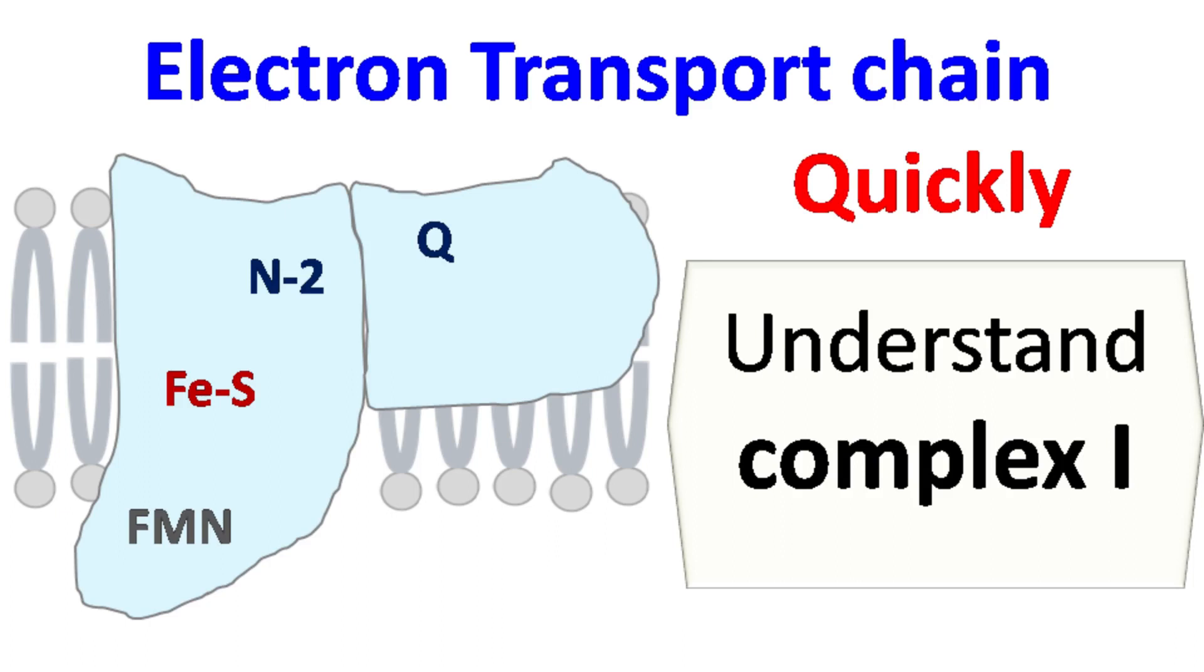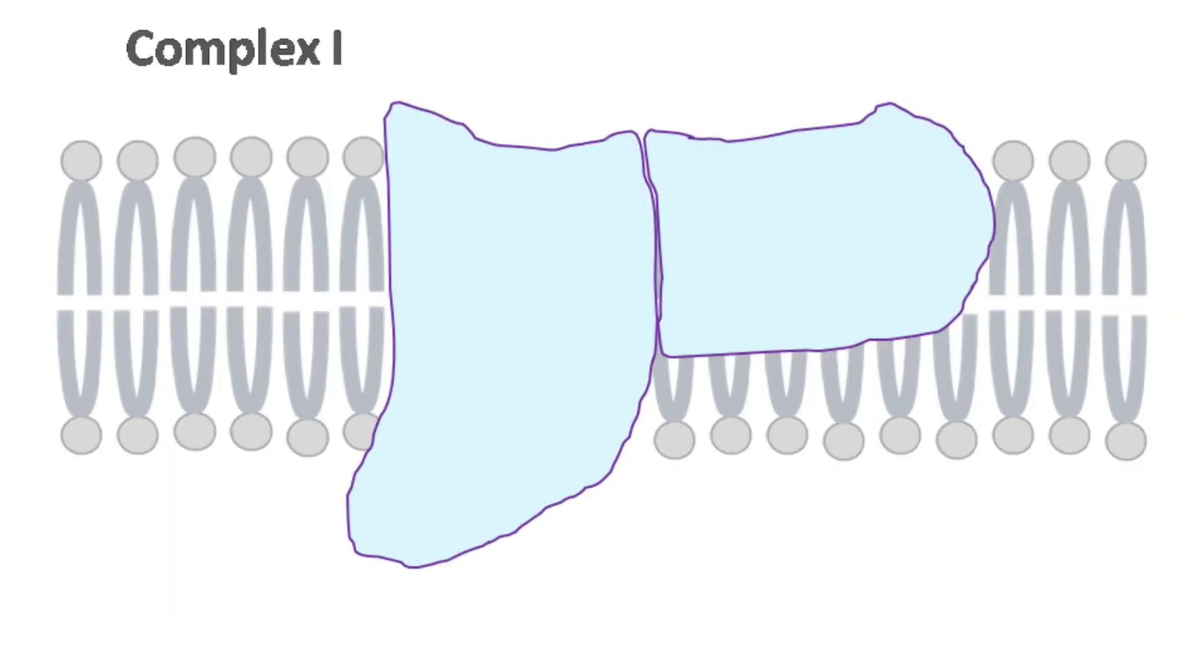Hey everyone, quick biochemistry basics here. Let's talk about Complex I of the electron transport chain. Complex I is also known as NADH dehydrogenase or NADH ubiquinone oxidoreductase. It is a large L-shaped complex made up of 42 different polypeptide chains.